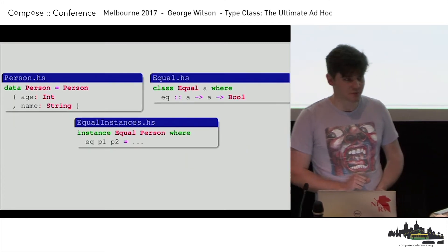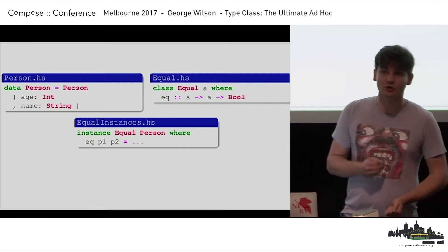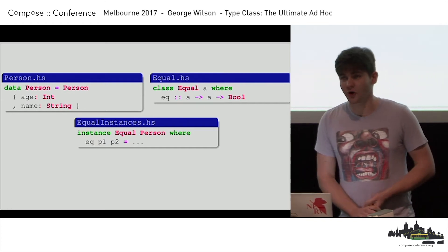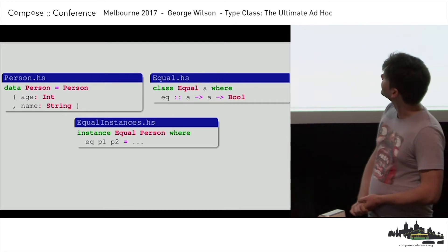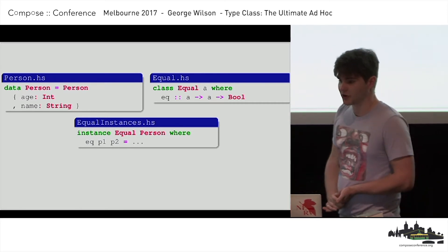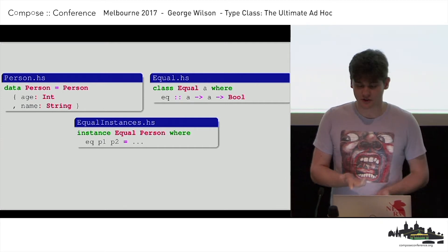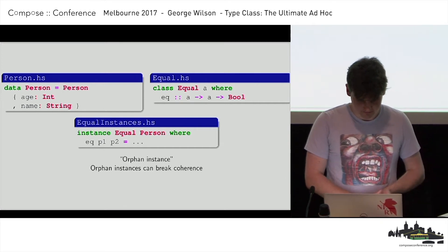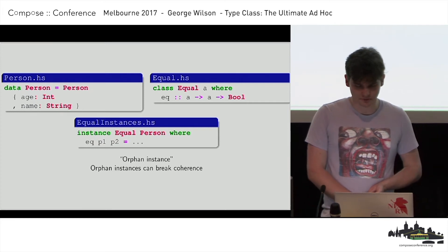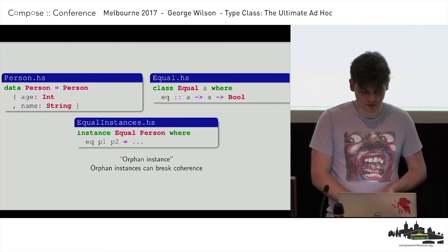This is an example of breaking type class coherence — something called an orphan instance. An orphan instance is an instance defined not in those two files: the file that defines the type and the file that defines the type class. Orphan instances can be used to break coherence, so we generally disallow them. I'll come back to that later in the talk.